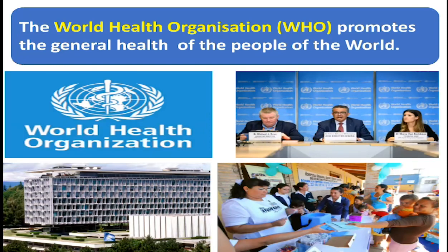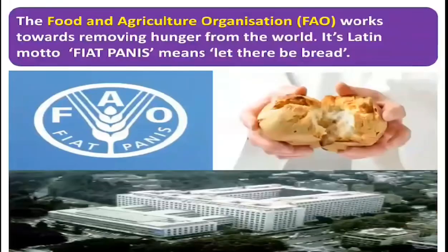The Food and Agriculture Organization works towards removing hunger from the world. Its Latin motto 'via furnace' means 'let there be bread.' The works of FAO include achieving food security for all — making sure people have regular access to enough high quality food to lead active and healthy lives. It helps eliminate hunger, food insecurity, and malnutrition, makes agriculture more productive and sustainable, reduces rural poverty, and ensures inclusive and efficient agricultural and food systems.